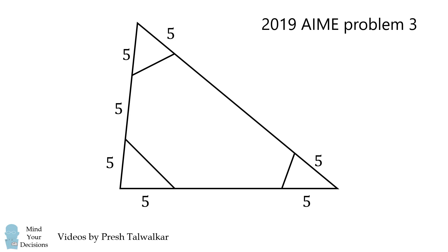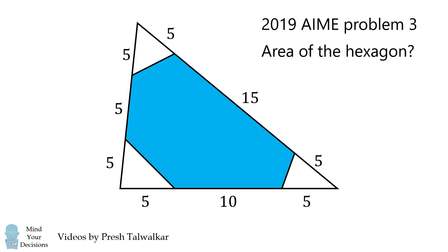The remaining distances are equal to 5, 10, and 15. The question is what is the area of the hexagon that's shaded?